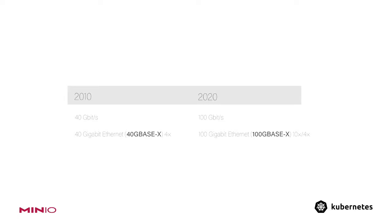Just like improvements in networking, storage has also shown impressive growth, both in terms of size of drives and in terms of throughput. Drive sizes have gone up from 600 gigabytes being the maximum size in 2010, to 16 terabyte drives available today. And then there's drive throughput. Today's drives can sequentially read data at 5 gigabytes per second — that's 40 gigabits per second. The best data from 2010 showed about 300 megabytes per second of read throughput from SSDs back then.